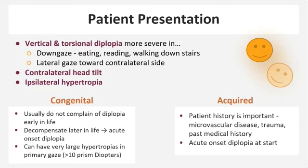Patients with cranial nerve 4 palsies will complain of double vision while eating, reading, or looking to one side. The second image that they see will be below the original image and rotated slightly. Some patients may tilt their head away from the affected side to help minimize their diplopia, and the affected eye will be hypertrophic relative to the unaffected eye.